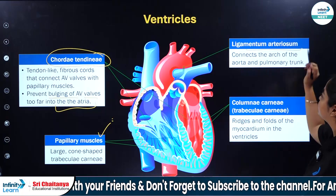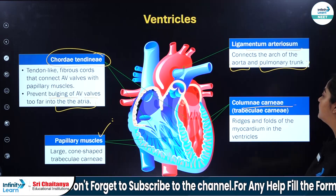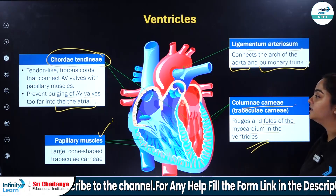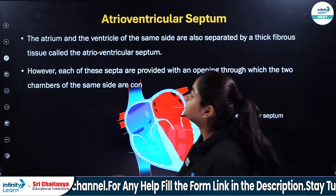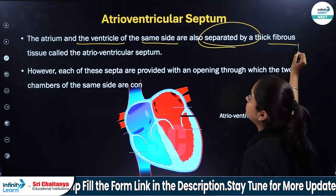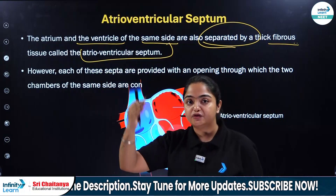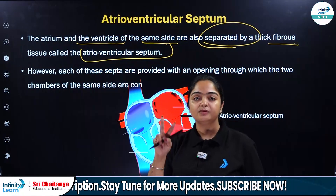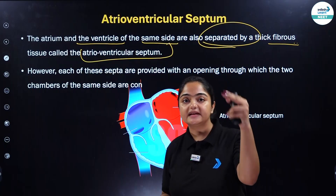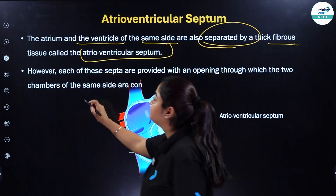We also have the ligamentum arteriosum, which connects the arc of the aorta and the pulmonary trunk. Then we have columnae carneae, which are responsible for the folds of the myocardium in the ventricles. The atrium and ventricle of the same side are also separated by a thick fibrous tissue known as the atrioventricular septum — different from the interatrial and interventricular septum, which separate chambers on opposite sides.